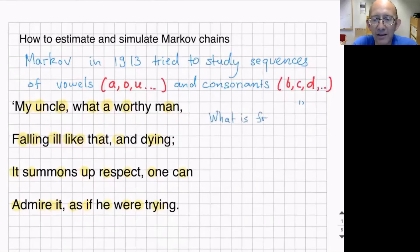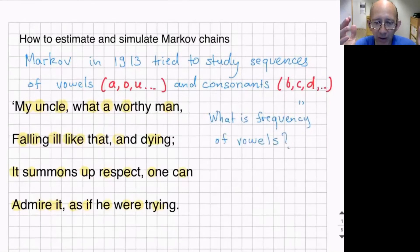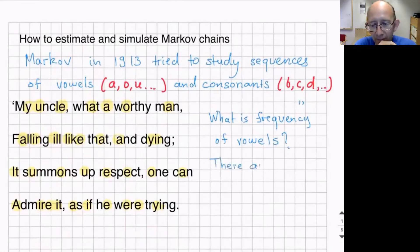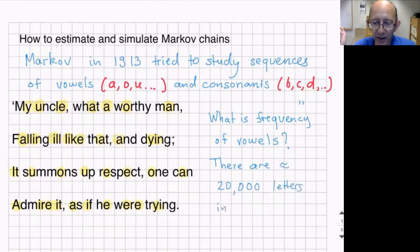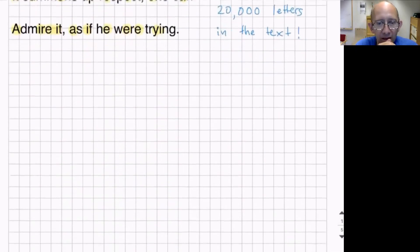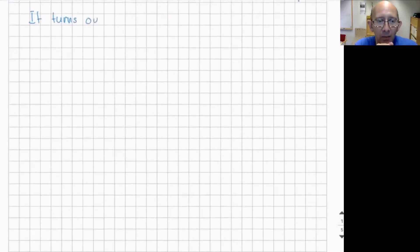We can ask ourselves, what is the frequency of vowels? What part of the text are vowels — is it half of all the letters, or one third? If you study the whole 200,000 letters of Eugene Onegin, you will find that the fraction of vowels is approximately 0.43. So this is what Markov found.